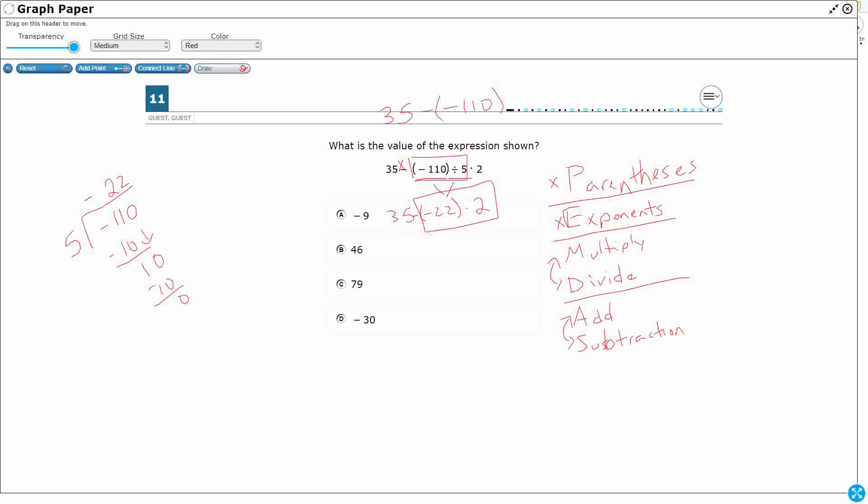So negative 22 times 2. It's positive times a negative, so it's still going to end up being a negative. So that's going to be negative 22 times 2, that's going to be 4. So negative 44.